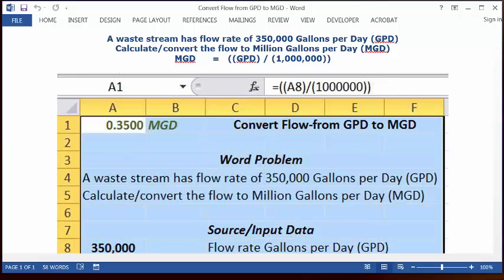So for example, in my problem 350,000 gallons is my gallons per day. Let's say in your situation 25,000 gallons is your situation. So you would come here to cell A8 and you would change that from 350,000 to 25,000 and you would automatically have your answer up here in A1 which would be 0.0250. So that's how this automatically works.